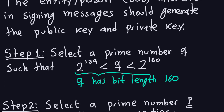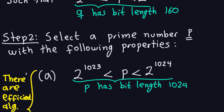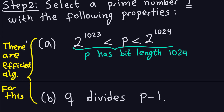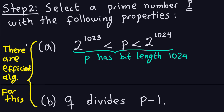Step two: select another prime number P of bit length 1024, meaning 2^1023 < P < 2^1024. An additional critical property is that Q must divide P minus 1 exactly. Whatever P you choose, Q must go evenly into P − 1. Steps one and two are typically the most time-consuming parts of key generation, though efficient algorithms exist for finding such primes.